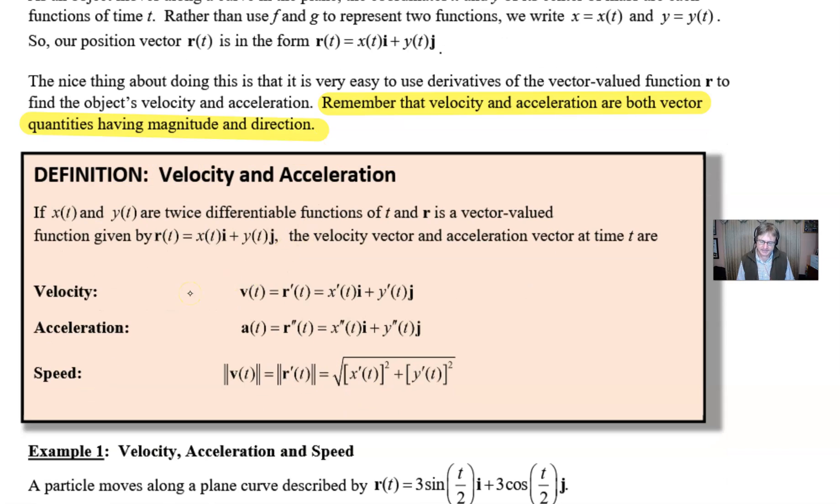Here's our definition of velocity and acceleration. Our vector-valued function is r = x(t)i + y(t)j. The velocity is just the derivative of that - you take the derivative of your x component and your y component, keep the i and j. The acceleration is exactly what you think: it's the second derivative. And then the speed is the magnitude of the velocity, which is the square root of x'(t)² + y'(t)². Note that speed is not a vector - it's a scalar quantity, so you don't see the i's and j's anymore.